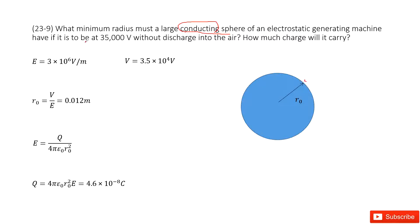So first, it has the potential at the boundary. This V is given. And also, keyword: without discharging into the air. That means the electric field generated at the surface will not cause the breakthrough of the air. So we can get the electric field to make breakthrough of the air, right?